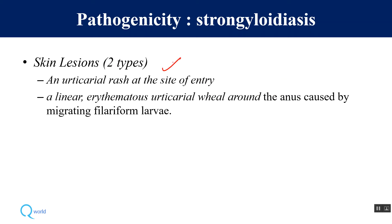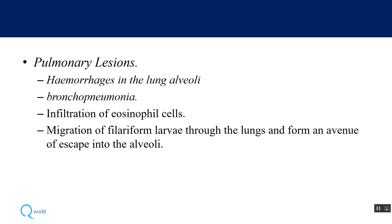The disease caused is known as strongyloidiasis. It causes skin lesions at the site of entry of filariform larvae, basically an urticarial rash. When the filariform larva migrates to the lungs, it can cause pulmonary lesions including hemorrhages in alveoli, bronchopathy, bronchopneumonia, and eosinophil migration into the lungs.